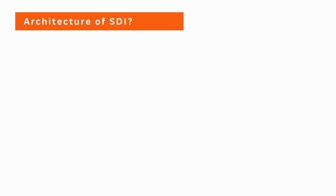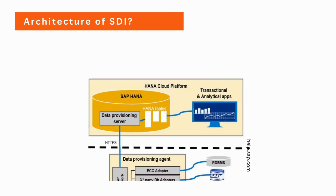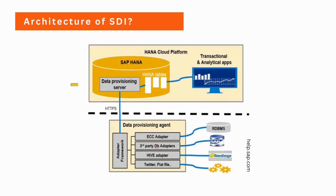Let's now talk about the architecture of Smart Data Integration. SDI has two main components: the data provisioning server and the data provisioning agent. The data provisioning server is the core processing engine of the architecture. It performs data integration tasks such as data mapping, data transformation, and data enrichment, and is responsible for moving data between the source and the target systems. The data provisioning agent is a lightweight agent that takes care of moving data from data sources to the data provisioning server.